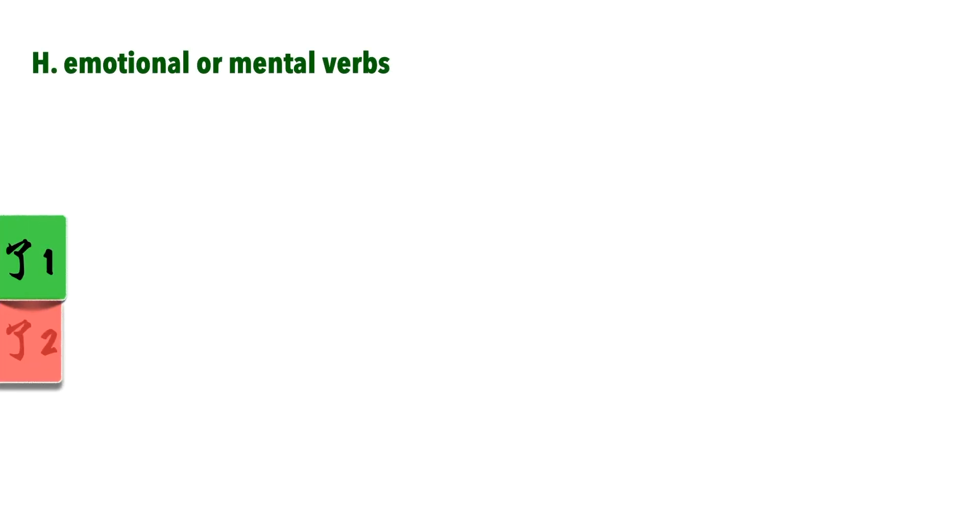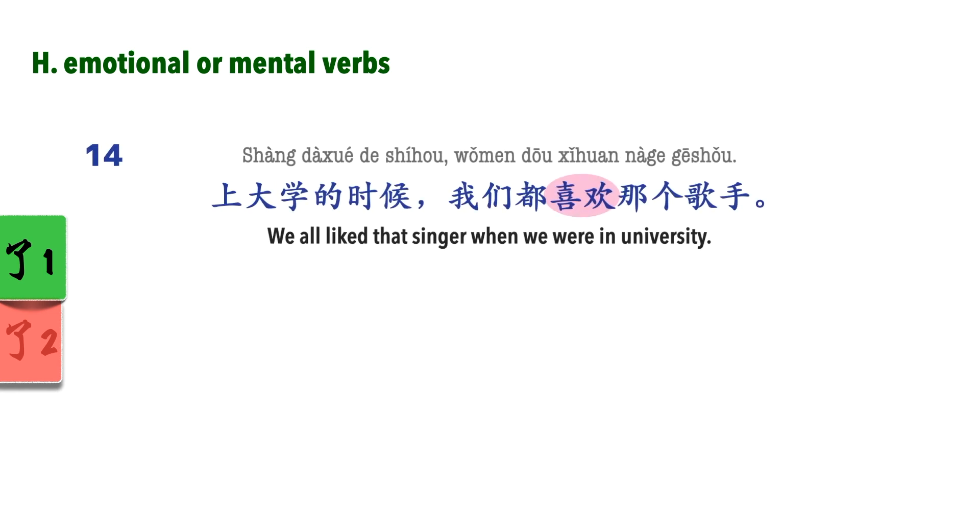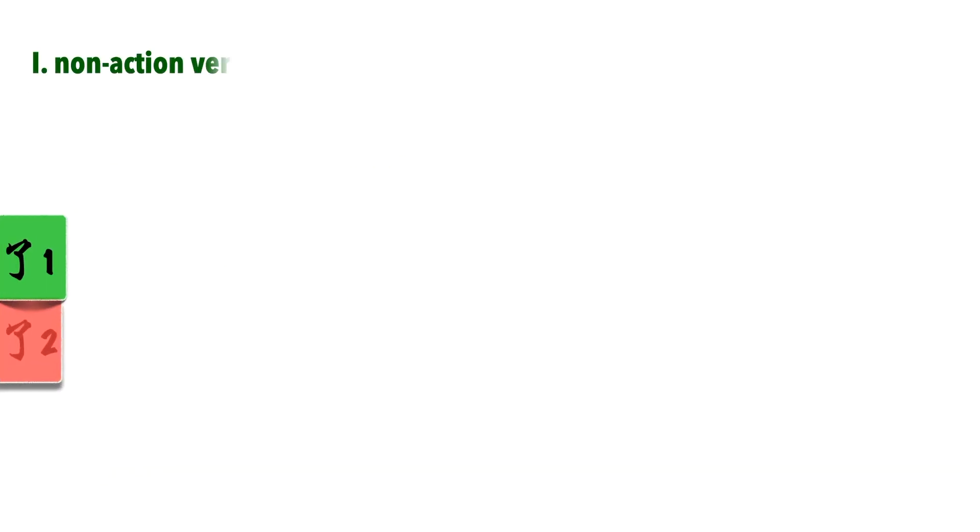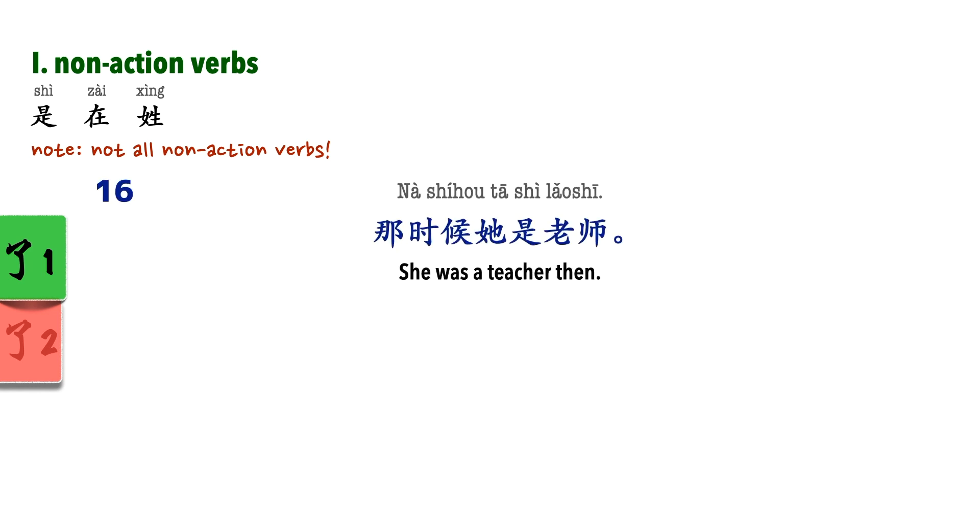Emotional or mental verbs. We don't use 勒1 with emotional or mental verbs, because these verbs are about emotional and mental states, not about completion of actions. 上大学的时候,我们都喜欢那个歌手. 我打算继续学习汉语. Non-action verbs. Again, verbs like 是,在,信 have nothing to do with completion, so 勒1 is not used. 那时候他是老师. 昨天我在家.